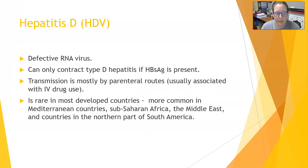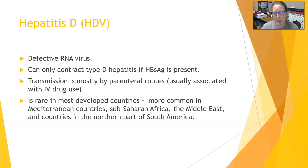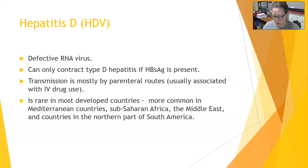Hepatitis D is a defective RNA virus. You can only contract type D hepatitis if the hepatitis B surface antigen is present, meaning the hepatitis B virus is already present. Transmission is mostly by parenteral routes, meaning injection into the blood, and it is usually associated with IV drug use. It is rare in most developed countries and more common in Mediterranean countries, sub-Saharan Africa, the Middle East, and the northern part of South America.